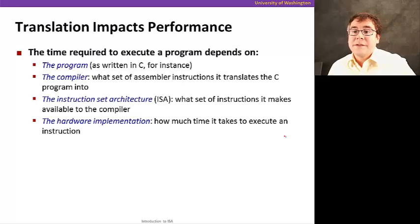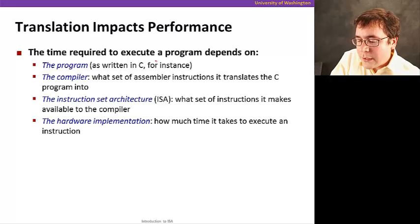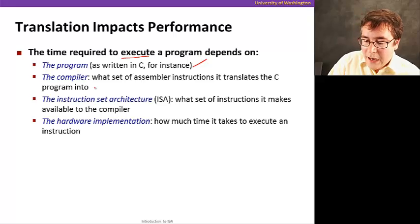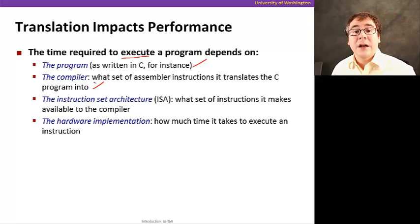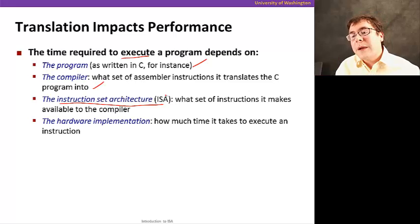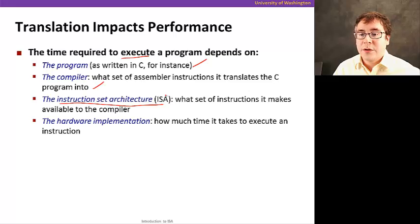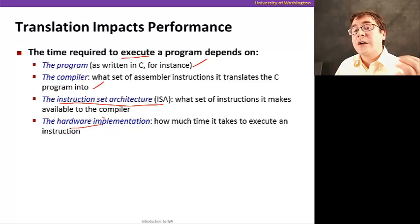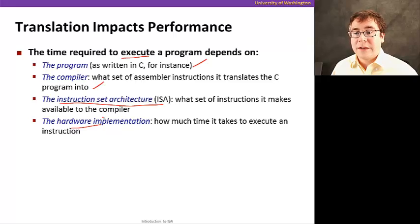The time required to execute a program depends on the program itself — what algorithm you've used — and how the compiler translates the code into assembly instructions. It also depends on the instruction set architecture, which is the set of basic instructions offered by the processor to the compiler or to whoever is writing assembly code. And ultimately, program performance is also a function of the actual hardware implementation — how the hardware itself is organized to execute those instructions.